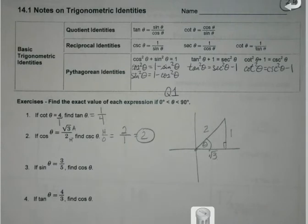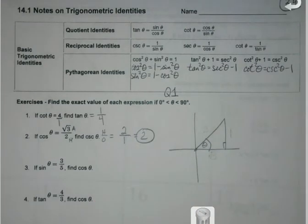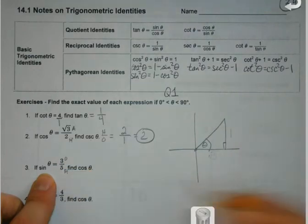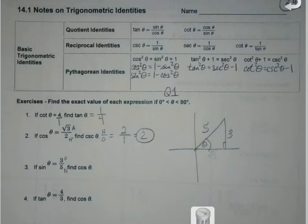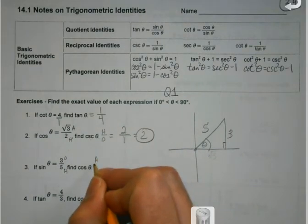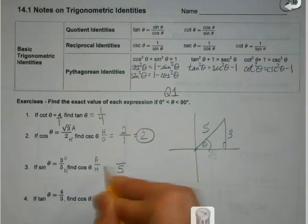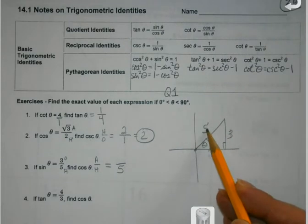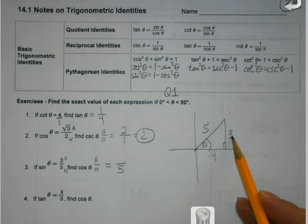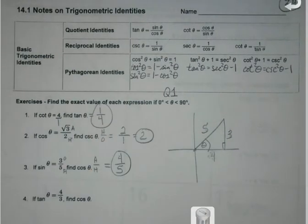If sine opposite over hypotenuse is 3 over 5, what's cosine? For cosine, I need adjacent hypotenuse, so I've got the hypotenuse. 25 minus 9 is 16, and its square root is 4, using the Pythagorean theorem again. And I can get to my solution that way.